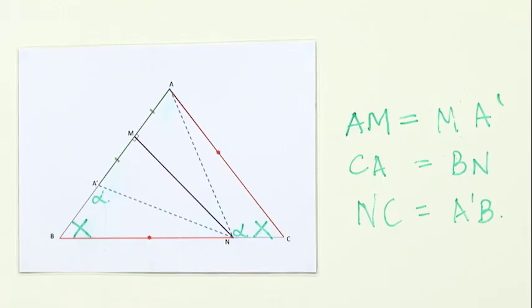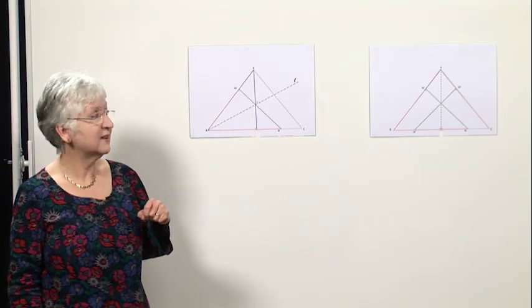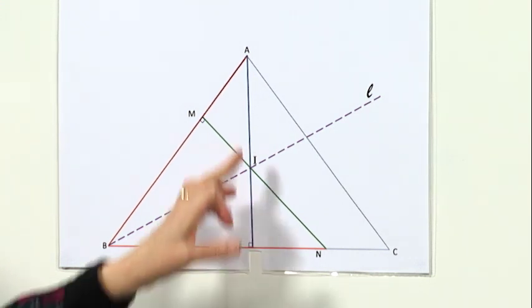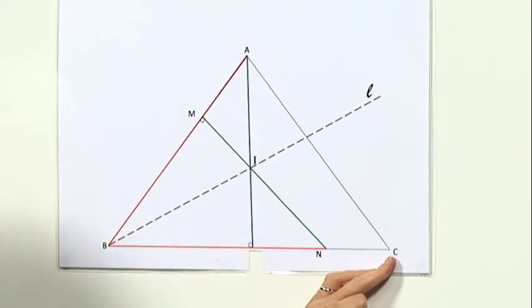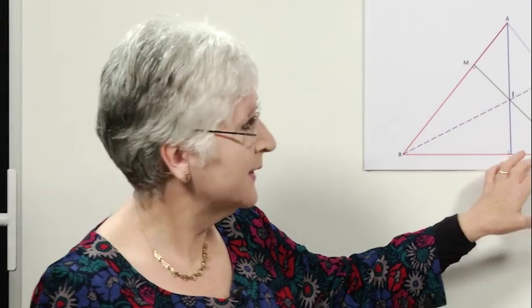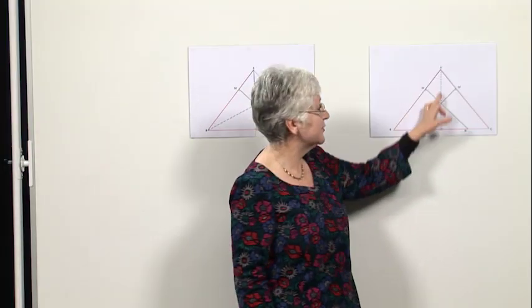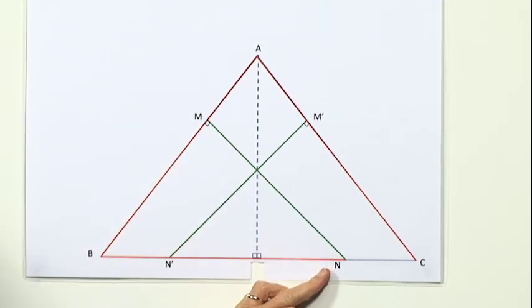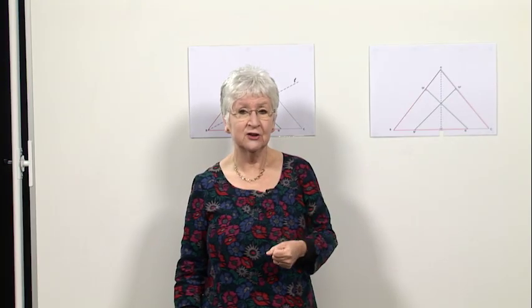So I've shown you one way of solving this problem, but you could also try several others. We could take an altitude from A and the bisector of the angle ABC and see if we could solve it using that diagram. Or we could take the altitude from A and reflect our line MN in that and try and solve it that way. Or we could even use trigonometry. So there are many ways of solving this problem.